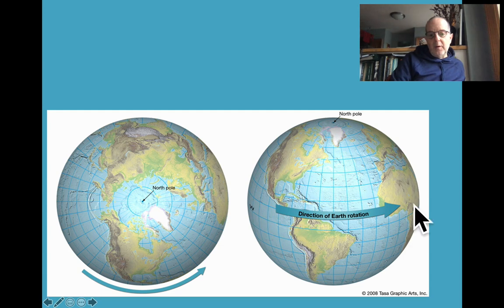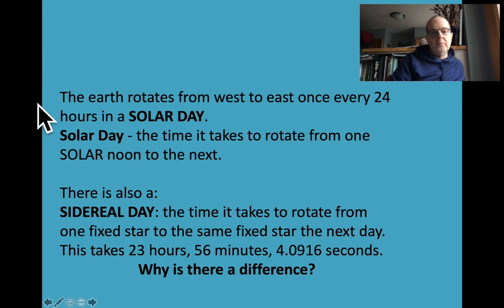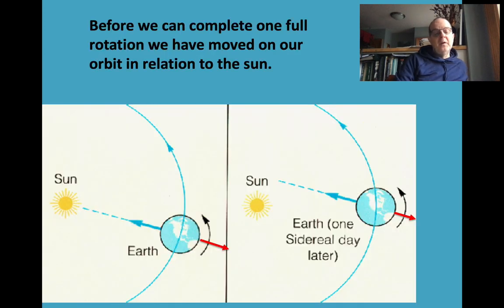We always rotate from west to east in a counterclockwise motion. We have a solar day, which is once every 24 hours from solar noon to solar noon, and we have a sidereal day. A sidereal day is the time it takes to rotate from one fixed star to the same fixed star, and that's a little bit less time: 23 hours, 56 minutes, 4.091 seconds. Why is that different?